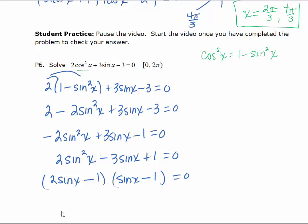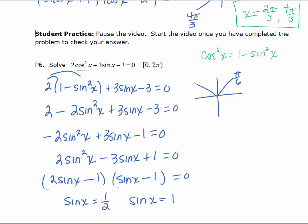We'll set each factor equal to 0, giving us sine x equals 1 half and sine x equals 1. For sine x equals 1 half, we're in the first and second quadrants, so the solutions are pi over 6 and 5 pi over 6. For sine x equals 1, that corresponds to the point (0, 1) on the unit circle, giving us pi over 2. So these are our three solutions. You can check these by plugging them into your calculator and seeing that you get 0.